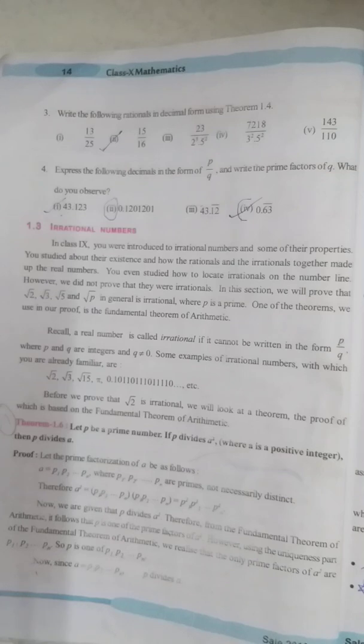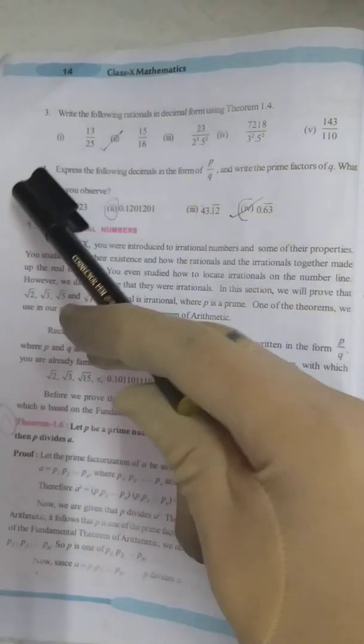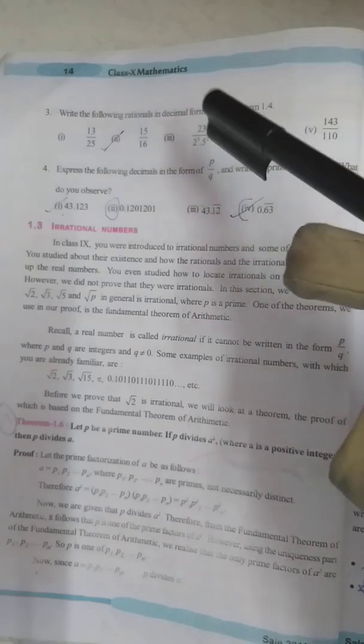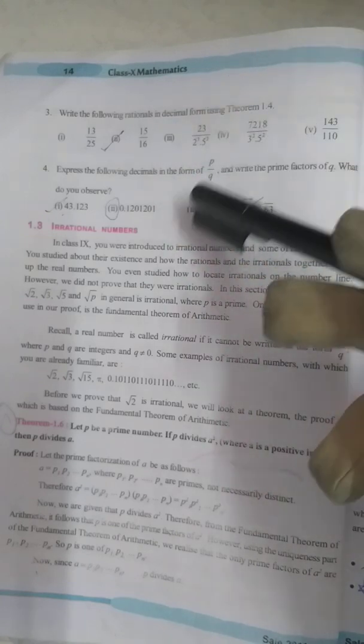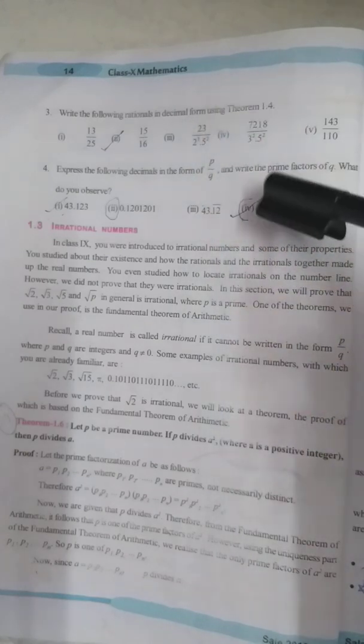Welcome to FM Education Academy YouTube channel. In today's video lecture, we will be discussing Exercise 1.3, Question 4, 3rd bit and 4th bit. That is when we have to convert this decimal form into P by Q form, that is rational form.